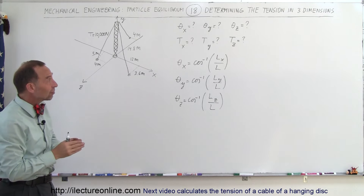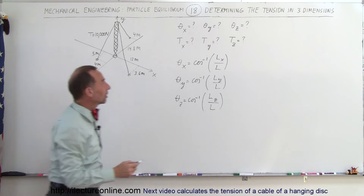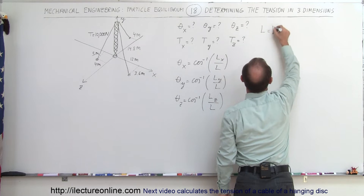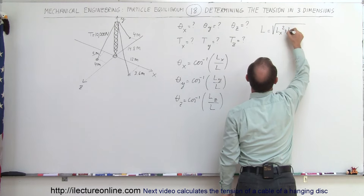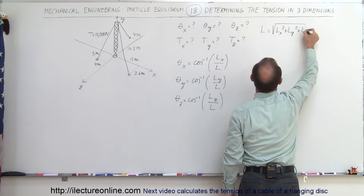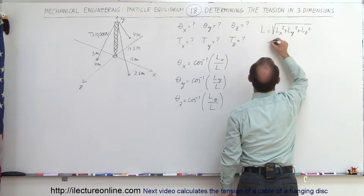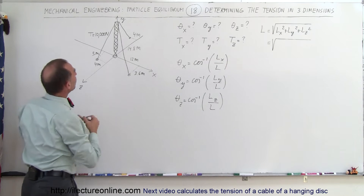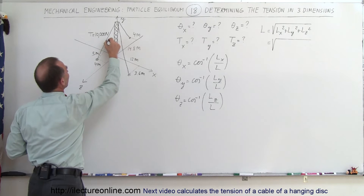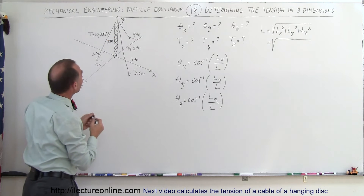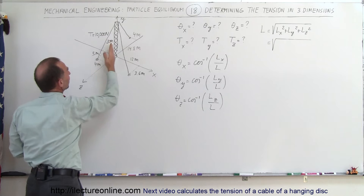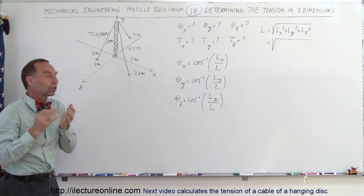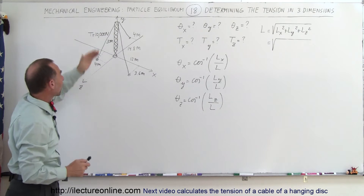To use the direction cosines, we first need to find the total length of that wire. The length equals the square root of the x-component squared plus the y-component squared plus the z-component squared. This is a 20-meter tall tower, so the y-direction is 20 meters. In the x-direction it's 4 meters, and in the z-direction it's 5 meters. Those are the components of the length of this wire.